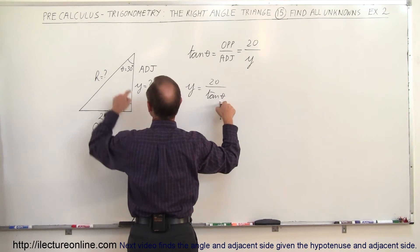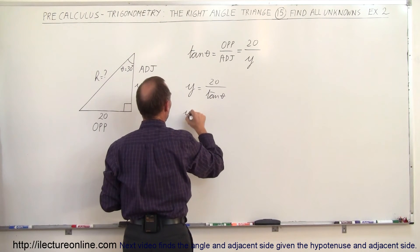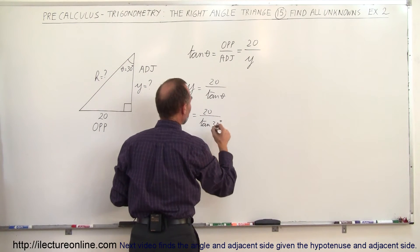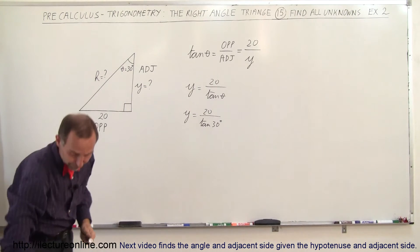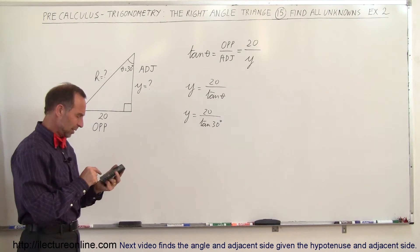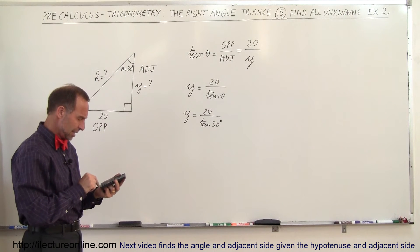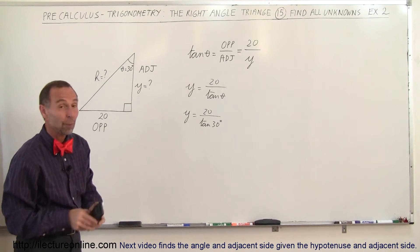Since we know the angle theta, which is 30 degrees, we can say that Y is equal to 20 divided by the tangent of 30 degrees. Then all we have to do is grab our calculator, and we can take 20 divided by the tangent of 30, and that is 34.6 degrees.